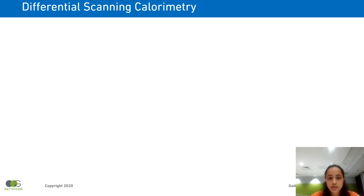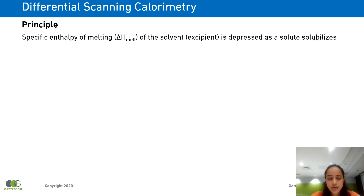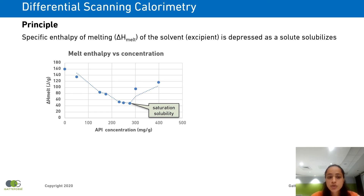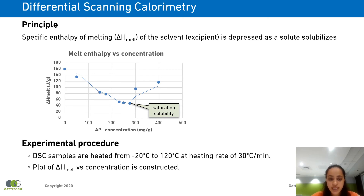Moving on to the second technique, which involves using differential scanning calorimetry for the determination of saturation solubility. We know that the melt enthalpy of a neat compound is depressed as a solute is solubilized in it. So for all the known concentrations of the API in the excipient, we first determine the melting enthalpy and then a plot is constructed of the melt enthalpy versus the API concentration. Ideally, you would observe that as the concentration of the API increases, the delta H melt of the excipient tends to decrease up to a certain point, after which it bounces back. The saturation solubility of the active lies at the sharp break in the plot of melting enthalpy versus API concentration.